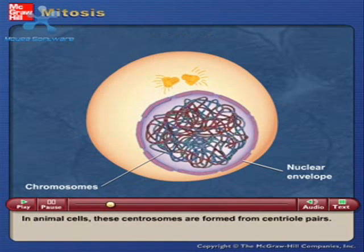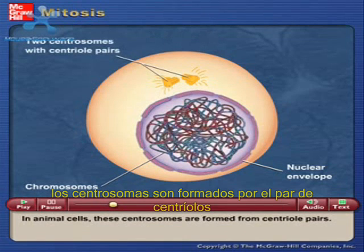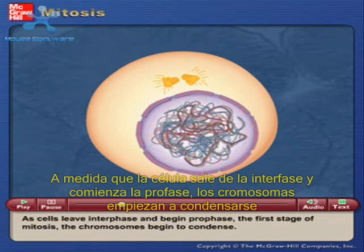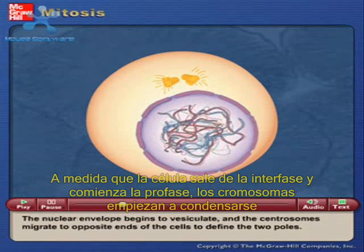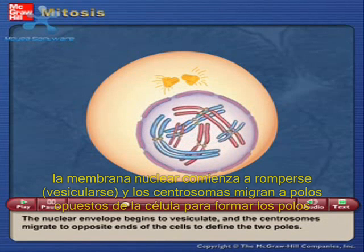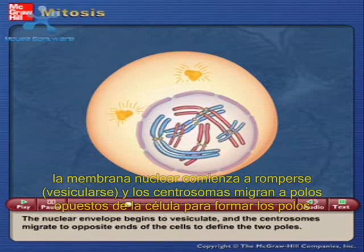In animal cells, these centrosomes are formed from centriole pairs. As cells leave interphase and begin prophase, the first stage of mitosis, the chromosomes begin to condense. The nuclear envelope begins to vesiculate, and the centrosomes migrate to opposite ends of the cell to define the two poles.